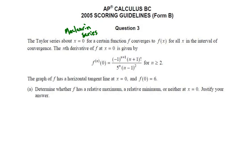We don't know what that interval of convergence is—that's probably something we're going to find out later. The nth derivative of f at x equals zero is given by the formula you can see above, and the graph of f has a horizontal tangent line at x equals zero, and f of zero is equal to six.